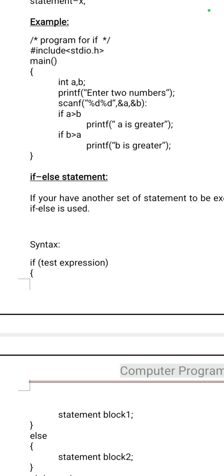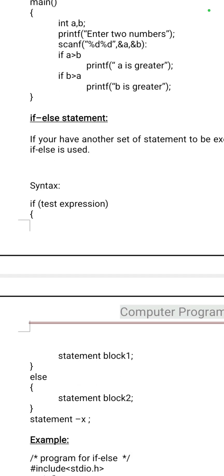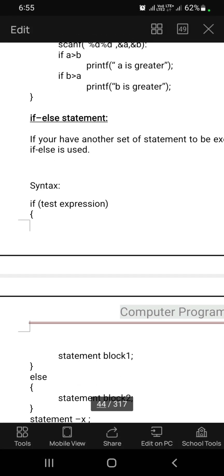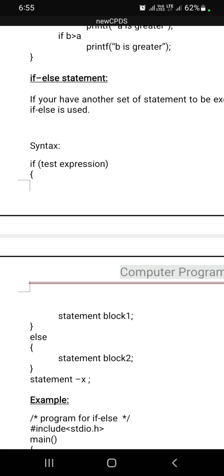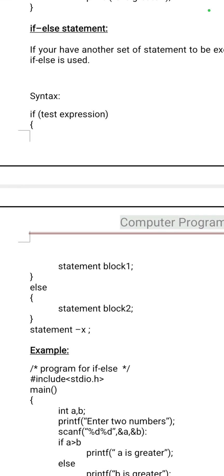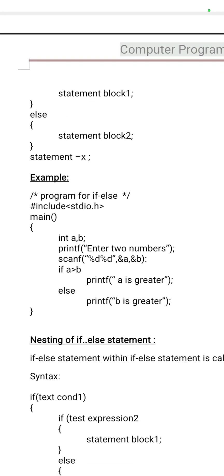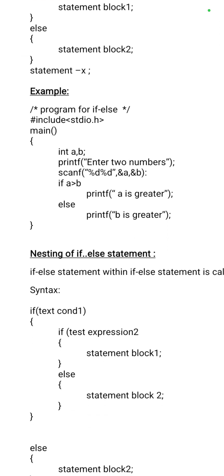The if-else statement: if the condition is true, execute the true block; else, execute the false block. For example, if a is greater than b then printf 'a is greater', else printf 'b is greater'. This is a simple example for if-else.